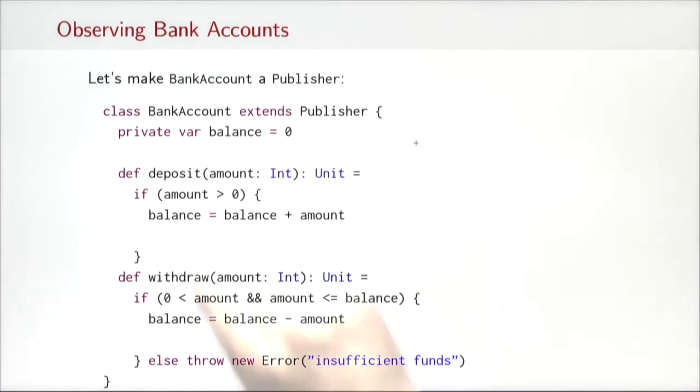So what do we need to do to make bank account a publisher? I have already given you the extension. So bank account now extends publisher. What we need to do of course is invoke publish because otherwise nobody will ever know about changes in the bank account. Where do we do that? Well, every time we change the state of the bank account. So I would propose we put a publish here and we put another publish here. One in deposit, the other in withdraw.